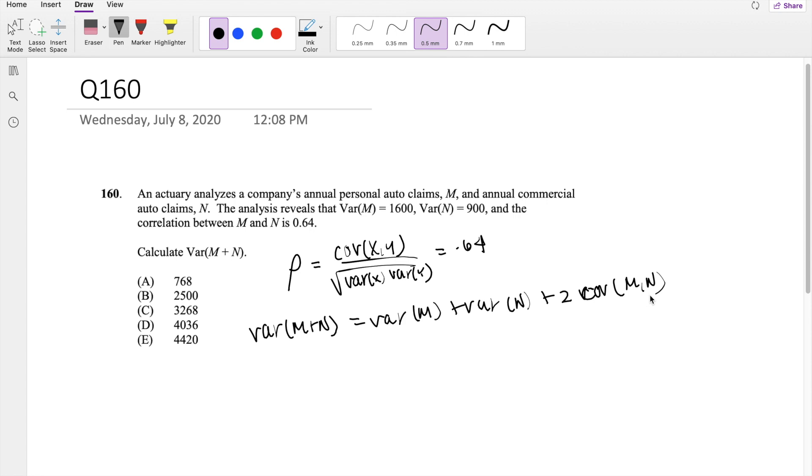So that's perfect, right? Using this rho here, we can actually find covariance. So covariance of m and n will be equal to 0.64 times square root of variance of x, which is 1,600, times the variance of y, which is 900. So then the covariance is equal to 768.